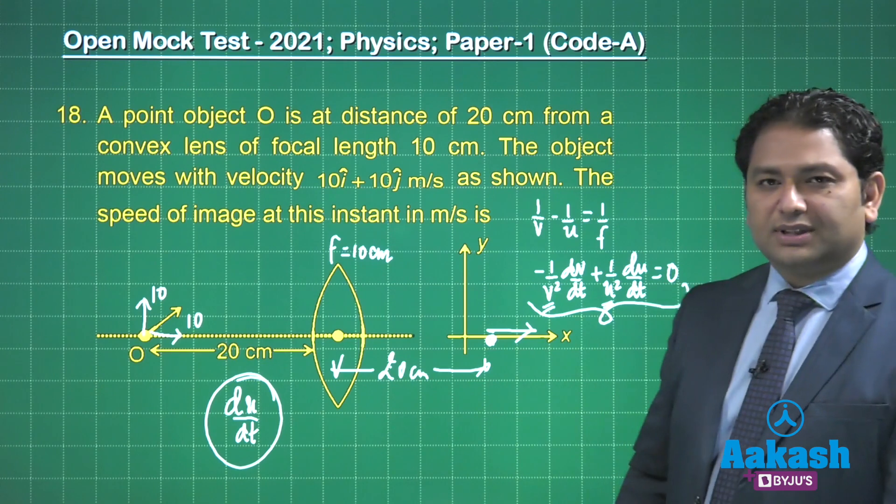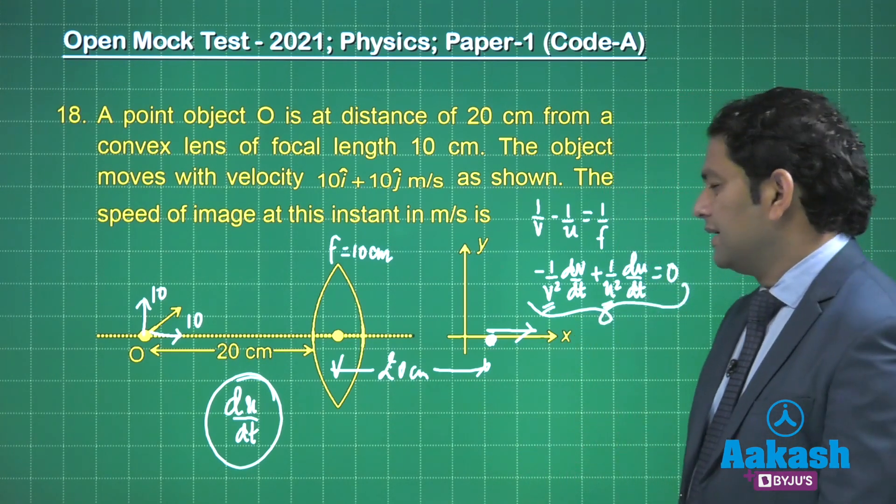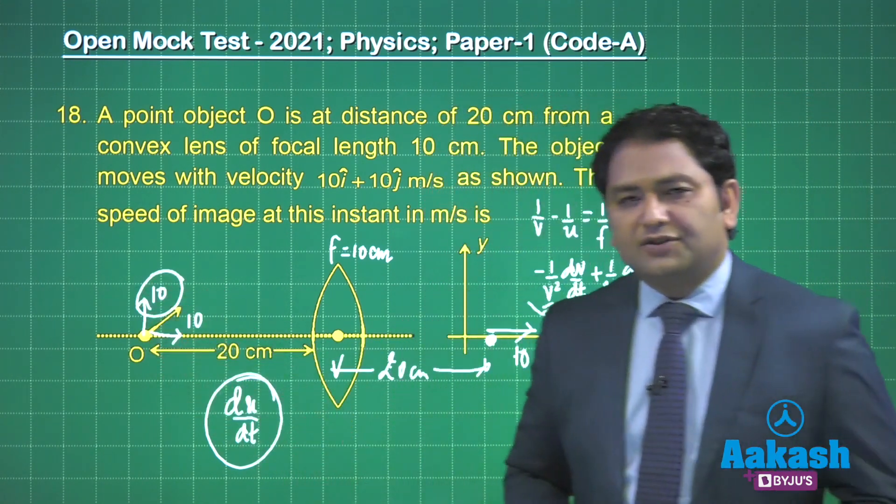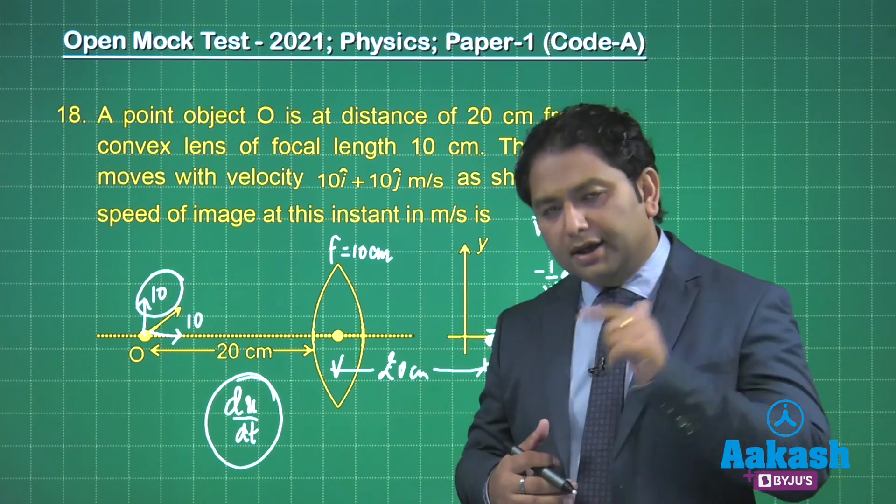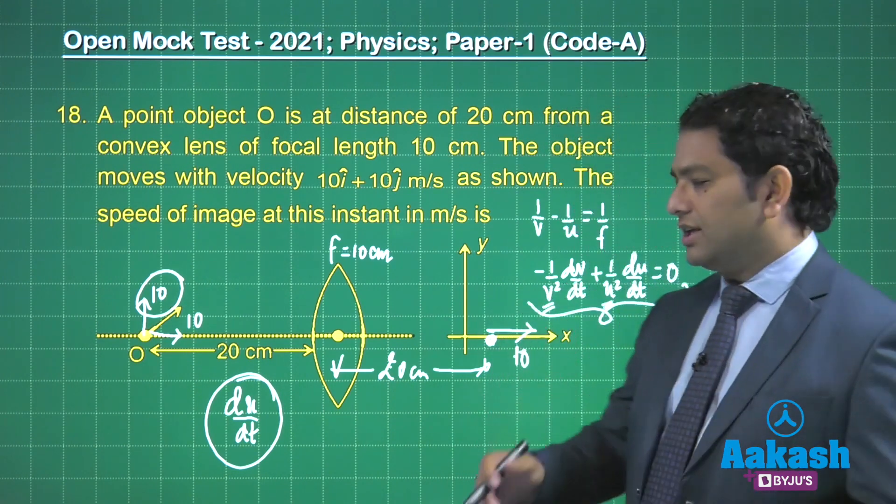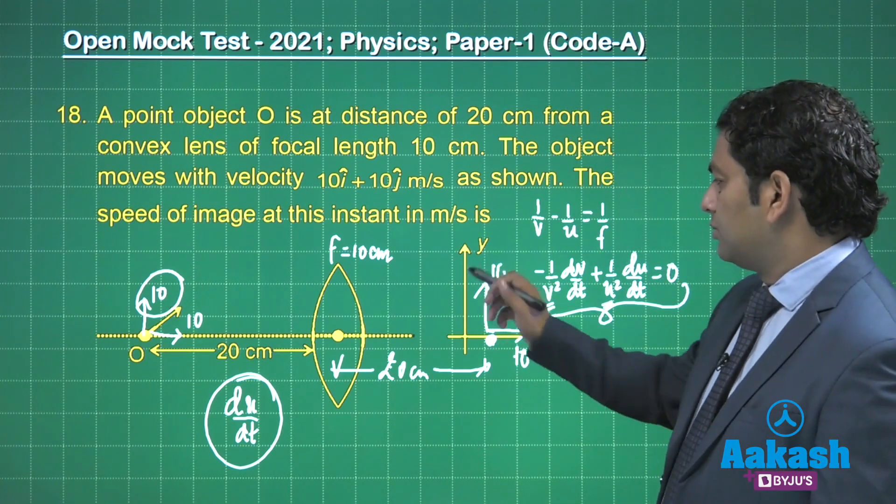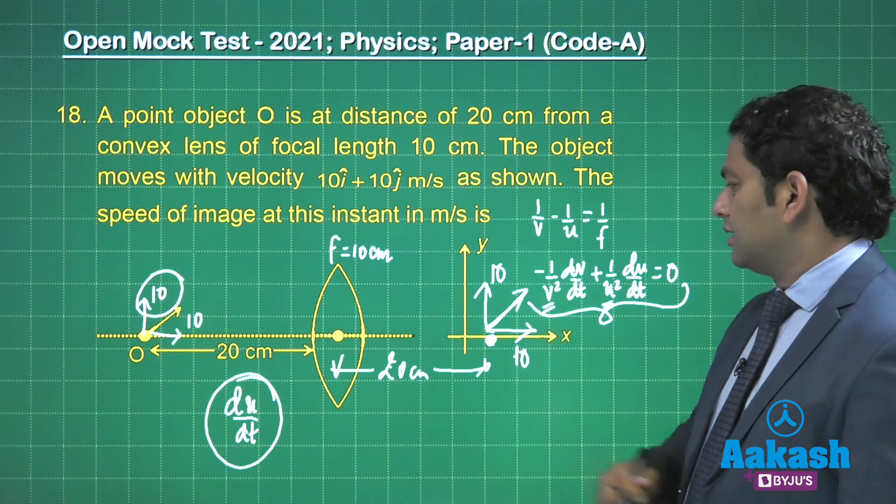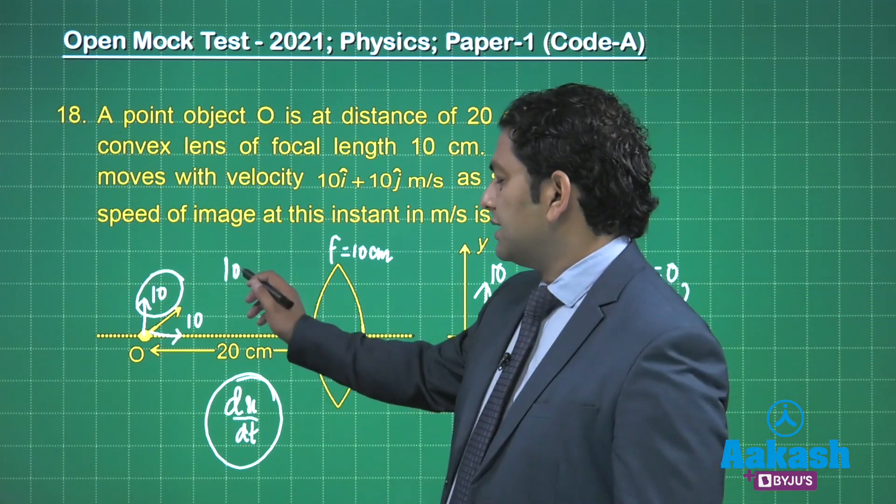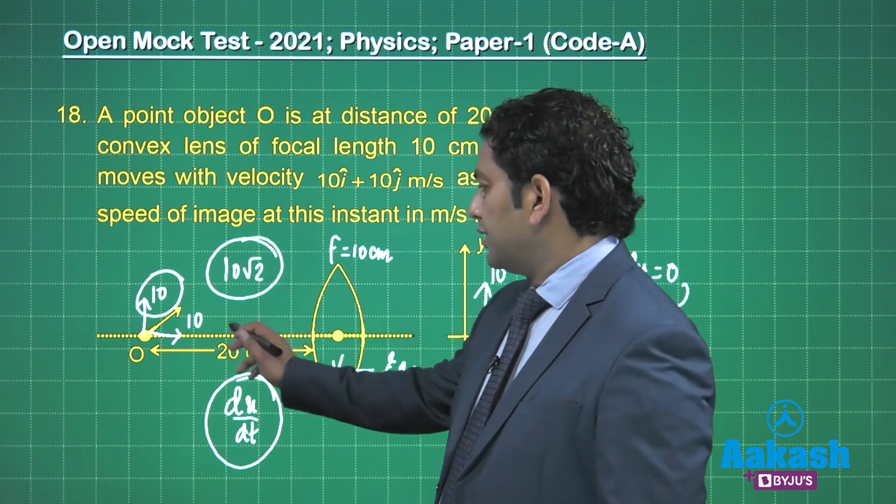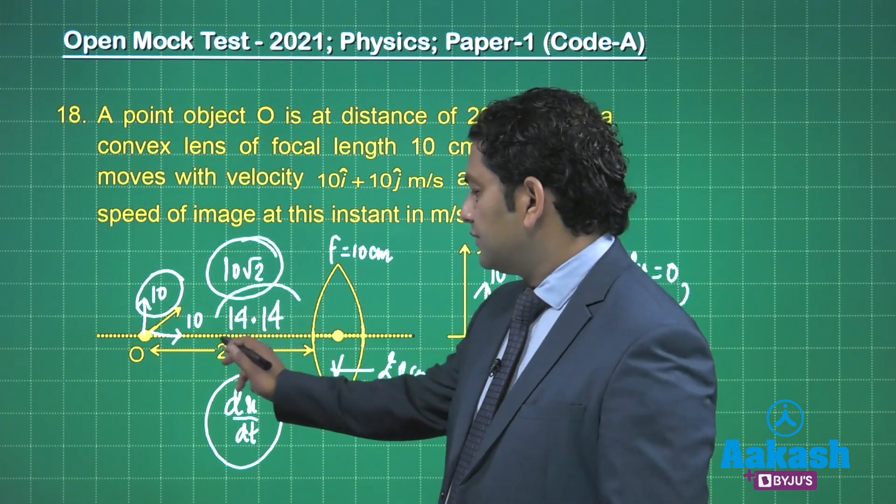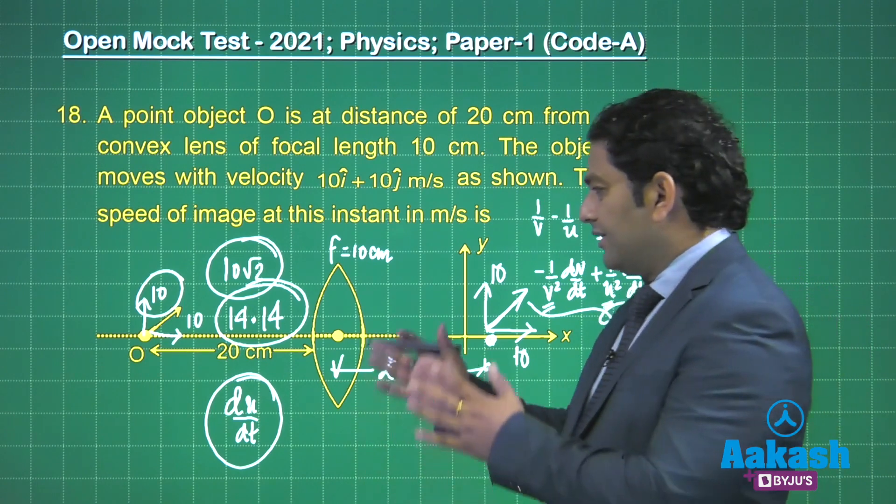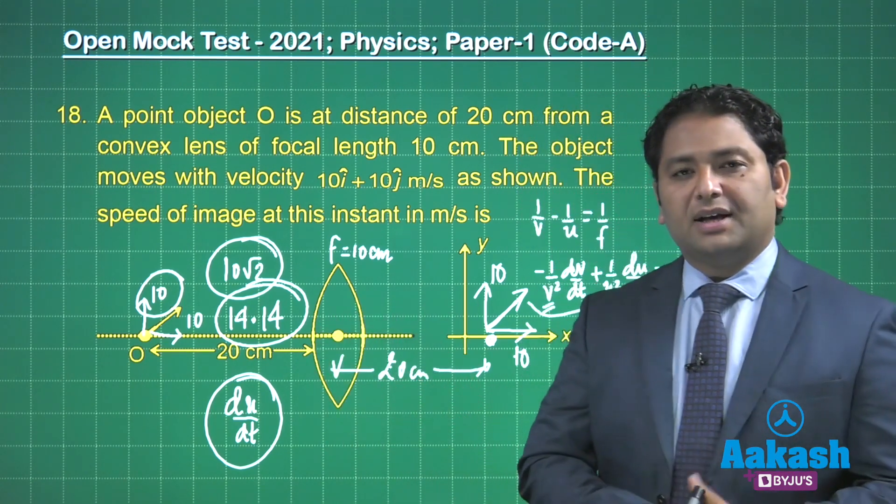Now how to handle this? This is rate of change of object height at this instant. Because the magnification is one, the rate of change of image height would also be equals to same, isn't it? And then the image speed would be the resultant of that. So that's going to be 10√2. So this value is going to be 14.14. So that would be the correct integer, because √2 is 1.414 in that way, right? So this would be the correct answer that you are going to report.